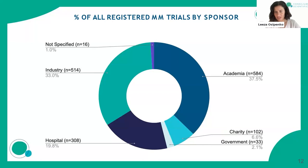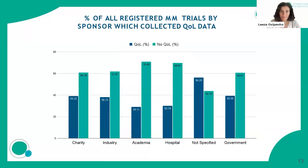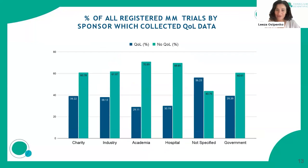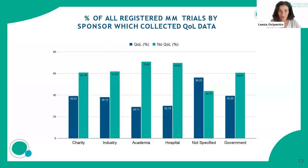For myeloma specifically, the top shares of trials are run by industry and academia. Looking at quality of life data collection by sponsor, the non-specified sponsors appear to do very well, but that's simply a technical administrative error of not entering the actual sponsor into the registry. Surprisingly, academia could have done better in terms of collecting quality of life data, while industry is doing comparatively well — but the question remains: are they doing enough?